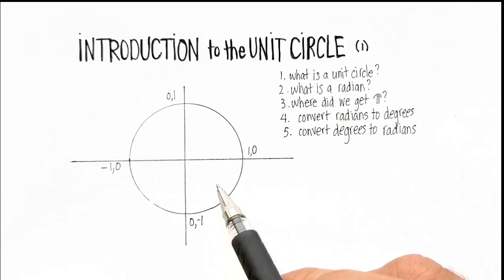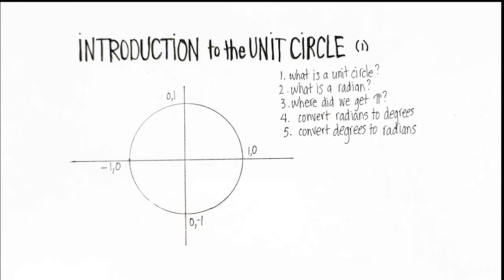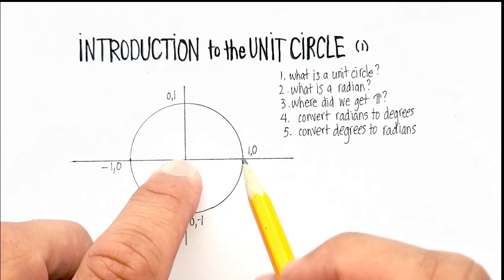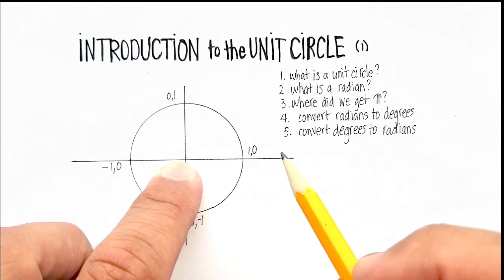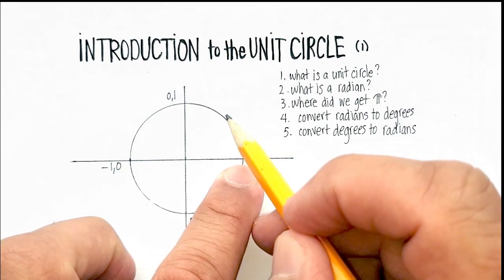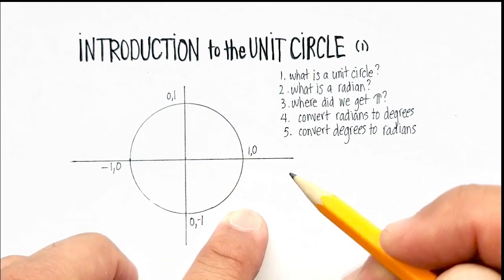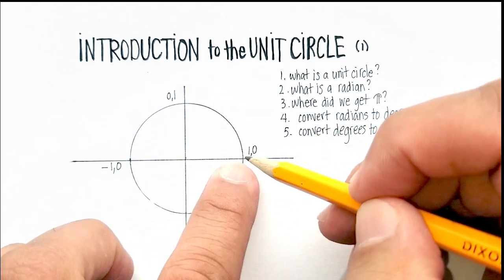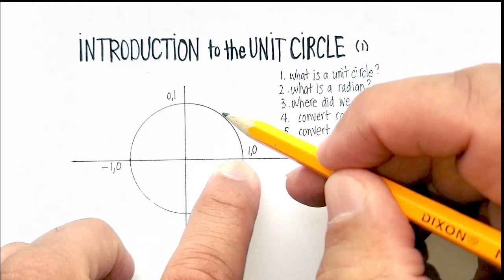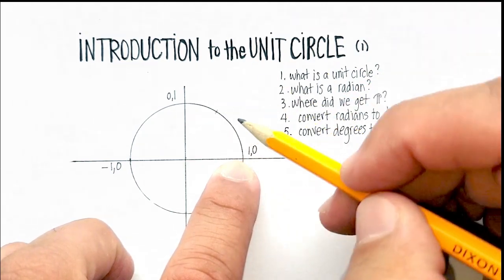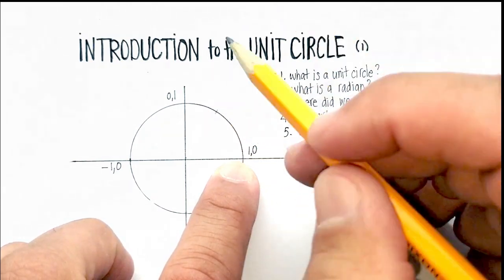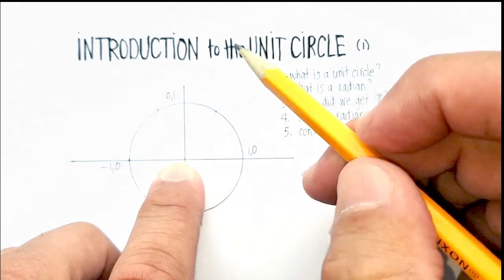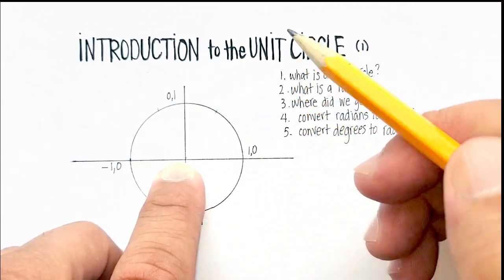What is a radian? Imagine taking this unit length — the radius from here to here — and making it like a spaghetti noodle, something really soft. Then start wrapping that unit length around the outside circumference of the circle. Laying one radius along the edge gets you to about here — that's one radian. Laying another one gets you to about here — that's two radians.